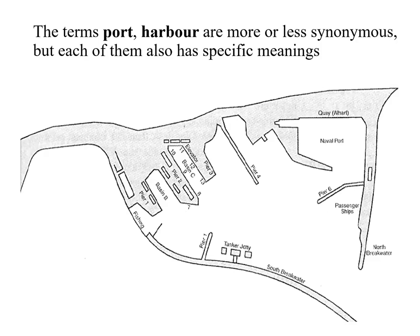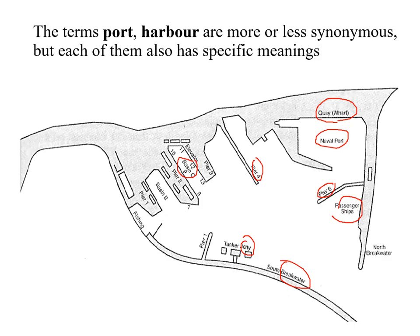In the harbor layout you can see a naval port space reserved for naval bases, then the quay or wharf, a pier, passenger ship areas, jetty, breakwater, and basin. We are going to look at these terms one by one. This is a simple layout of any port or harbor.